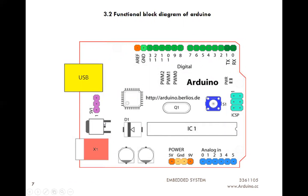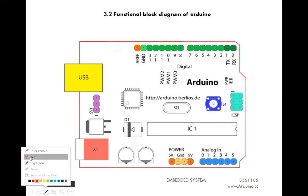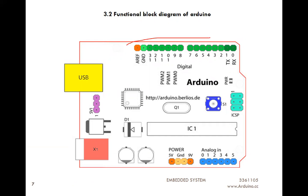Now we discuss the functional block diagram of Arduino. As shown in the figure, these are the digital input/output pins — total 13 digital I/O pins are there. These pins are used to read digital signals from different sensors and also generate digital output. The voltage capability of each pin is 5 volts and the current delivered by each pin is 40 milliamperes.